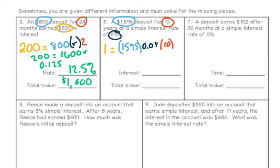The next problem says a $1,595 deposit for 10 years at a simple interest rate of 8%. The principal is $1,595, the rate is 8% written as a decimal, and the time is 10 years. I am solving for interest like we did on the last page. Doing the multiplication, I find that interest is $1,276. For the total value, I take my initial deposit and add the interest, giving a final total value of $2,871.